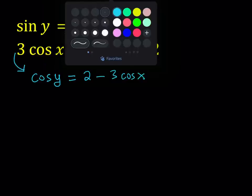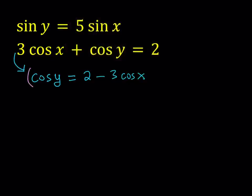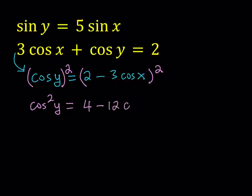Then I'll square both sides. That gives me cosine squared y equals — that's a (a minus b) quantity squared — 4 minus 12 cosine x plus 9 cosine squared x.